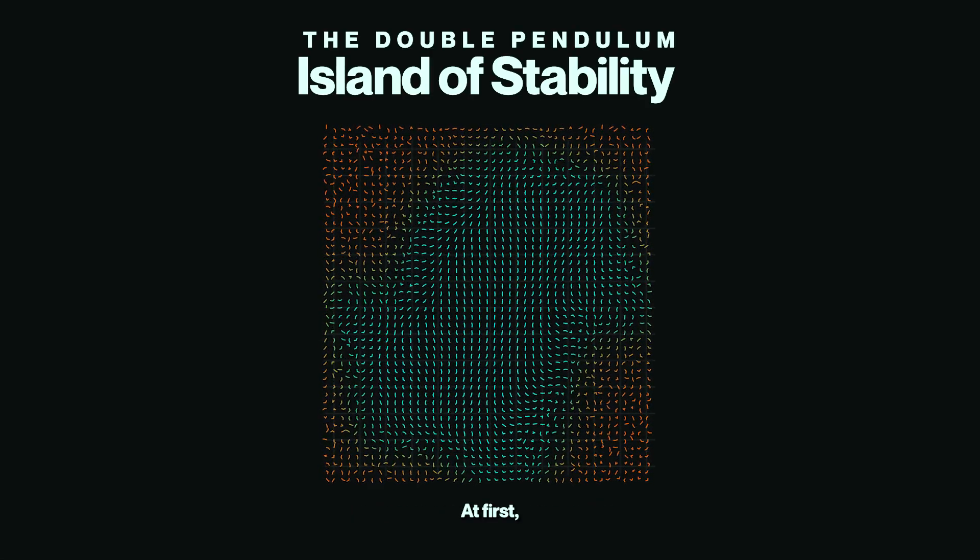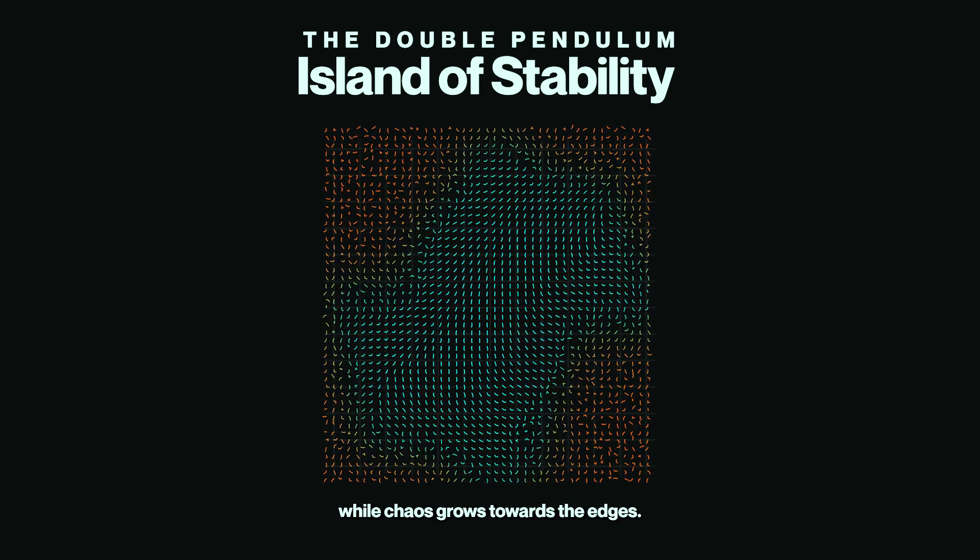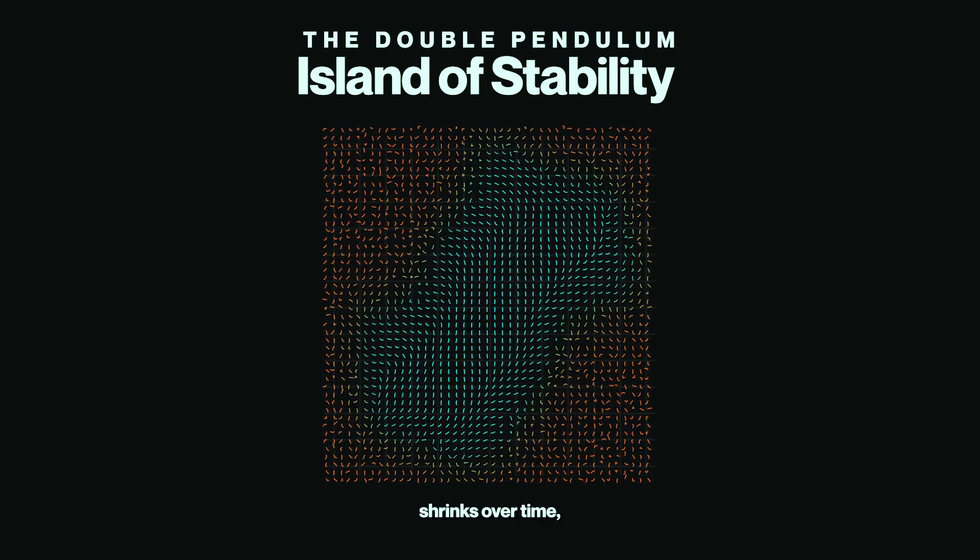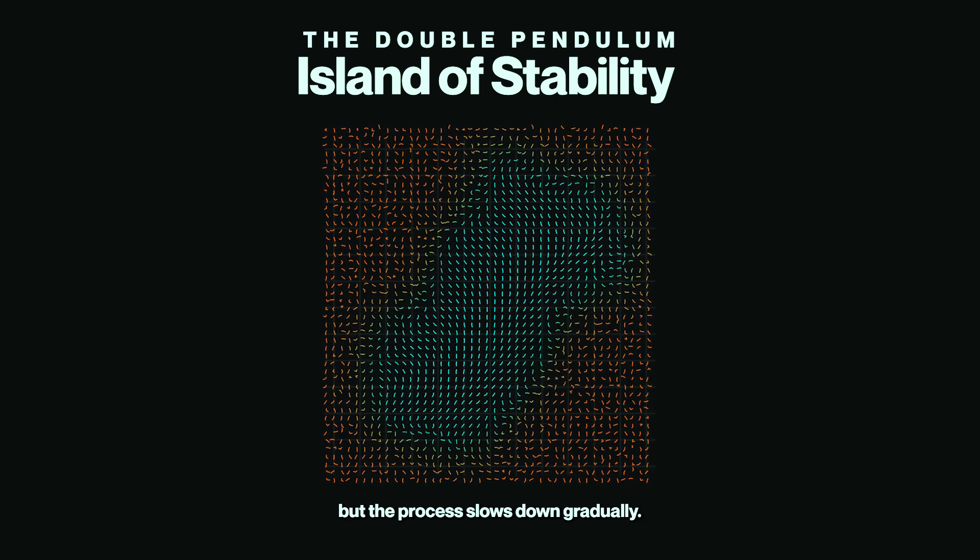At first, the center remains harmonious while chaos grows towards the edges. This island of stability shrinks over time, but the process slows down gradually.